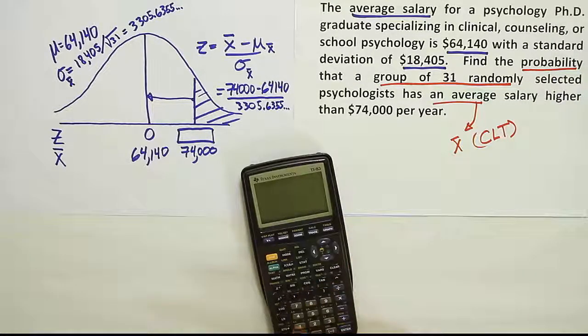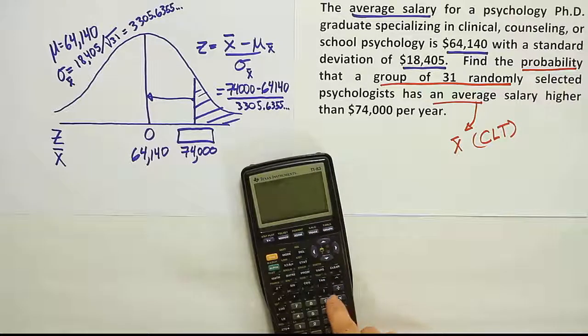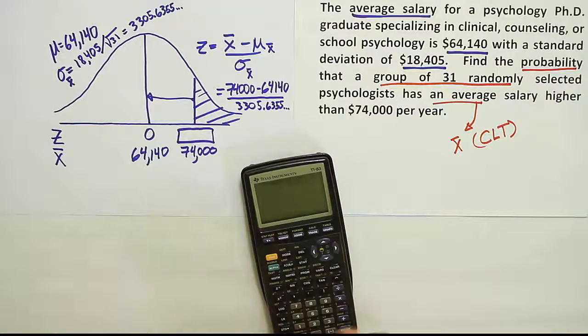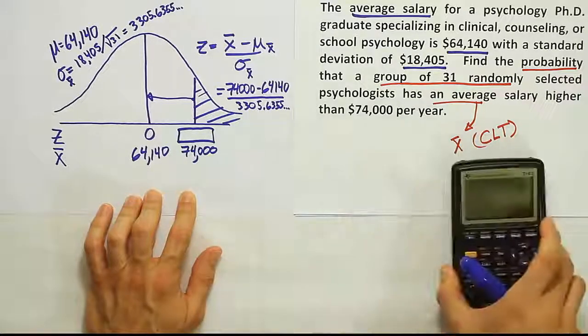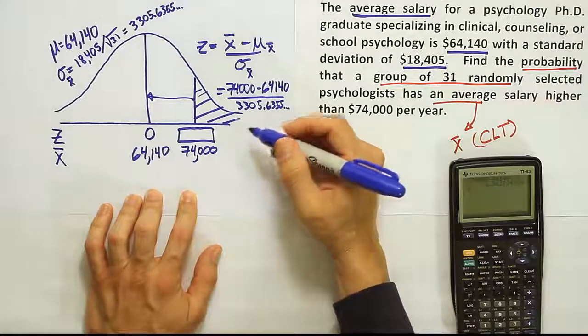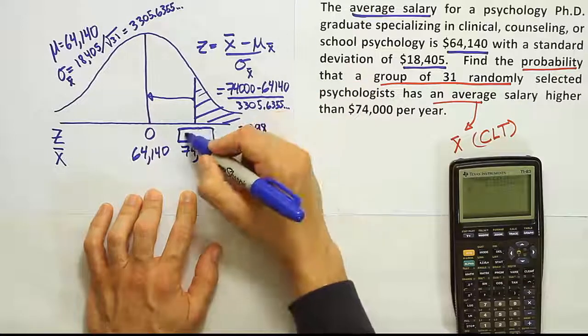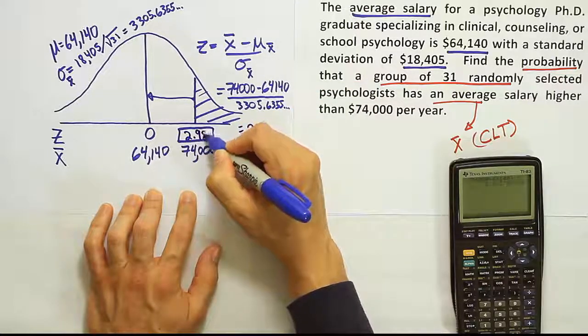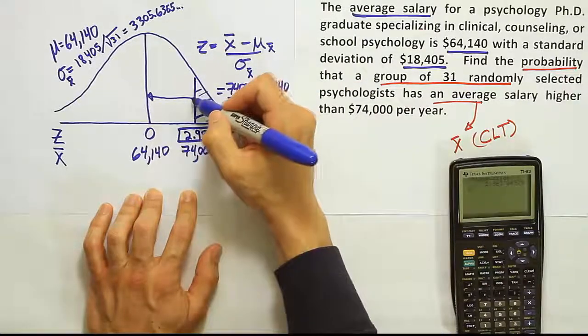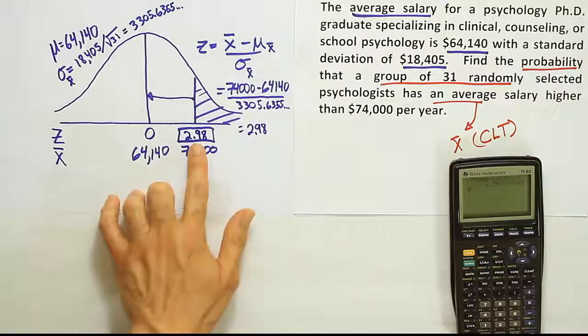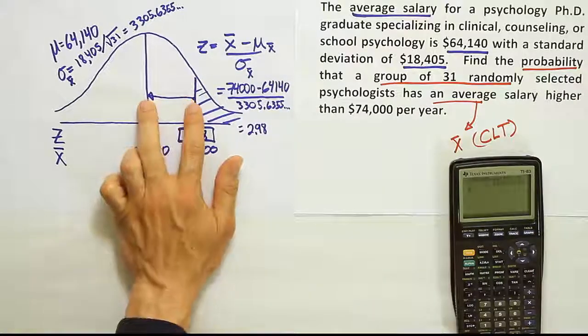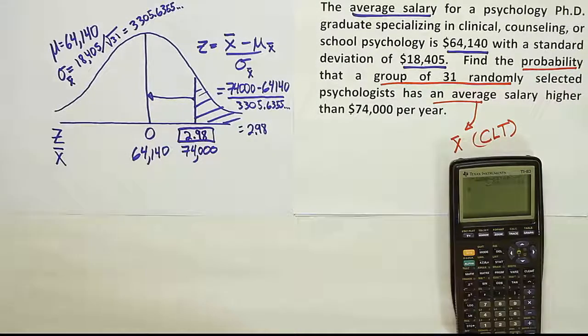So we'll have 74,000 minus 64,140. And we're going to divide that by that standard deviation, which I've already stored in my calculator. And we end up with 2.98 when you round it off to the appropriate number of places. So 2.98. So this is the z-score we have to look up, 2.98. If we find that z-score, we'll get the area from there to there. So let's look up 2.98 on the table and get the area from this line to the center. And at that point, we can find the area in the tail that we're actually looking for.